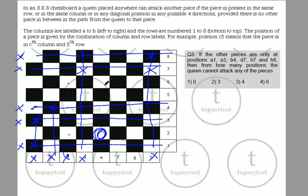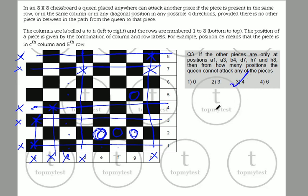Checking column C — every position in column C is eliminated due to diagonals or rows. Checking column E — one position, e3, appears safe. Checking column F — one position in F is also safe. Checking column G — placing the queen at certain positions in G, there are two safe positions. So there are a total of four positions on the board where the queen can be placed with no attack.